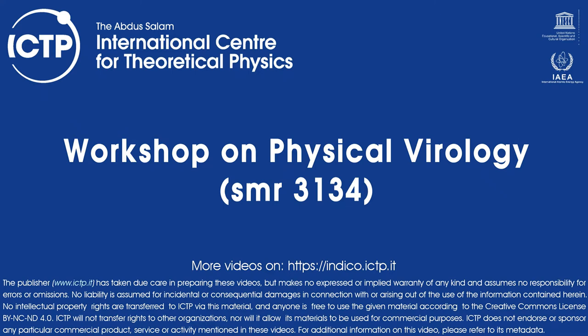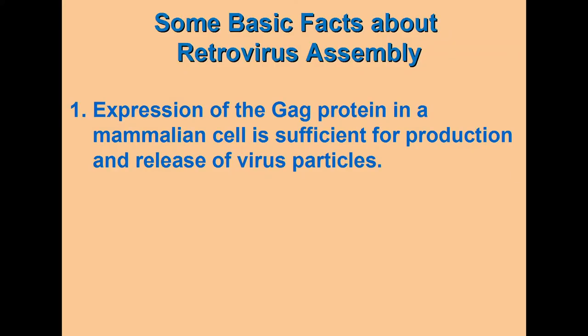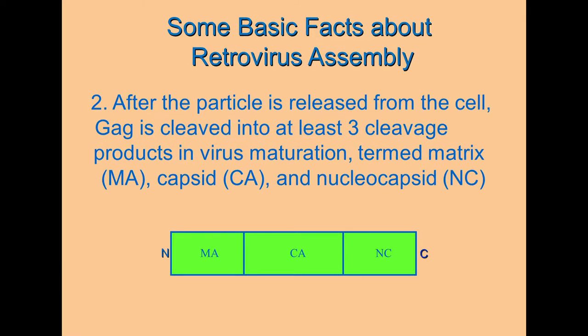Which GAG protein interacts with RNA? The GAG protein is the building block of the retrovirus particle. Expression of this protein in a mammalian cell, even in the absence of other viral proteins or of the viral RNA, is sufficient for efficient production and release of virus particles. After the particle is released from the cell, GAG is cleaved into at least three cleavage products by the viral protease.